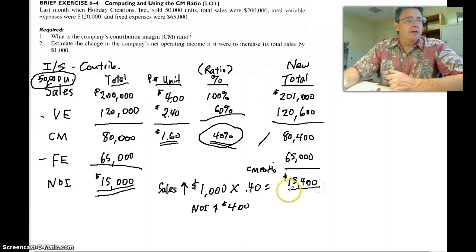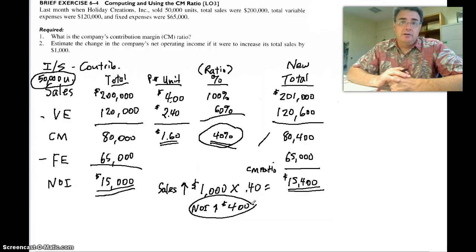So our new net operating income is $15,400 is our new net income number. What was our old net income number? $15,000. So what happened? We had a $400 increase, just like we predicted. Amazing, isn't it?